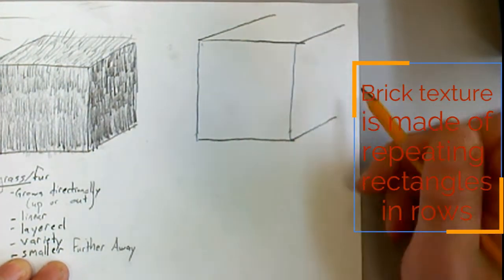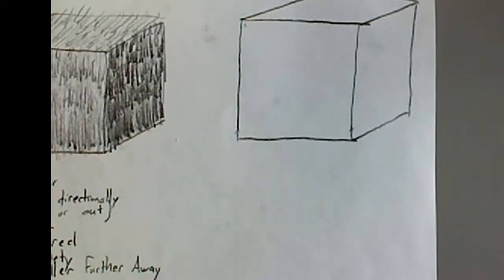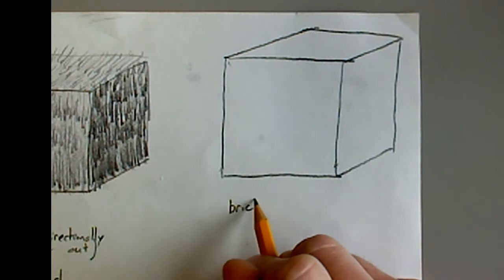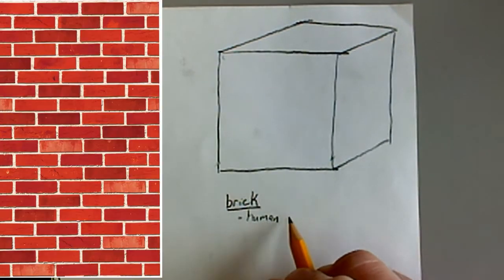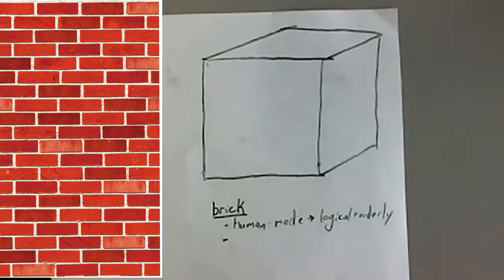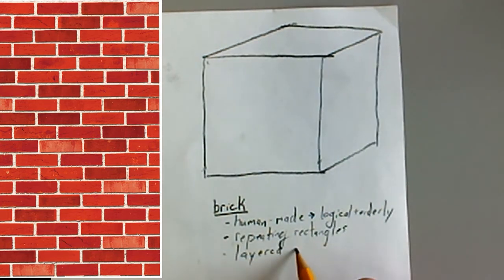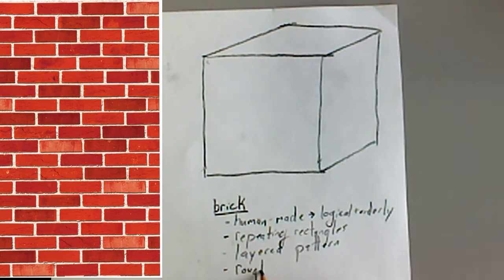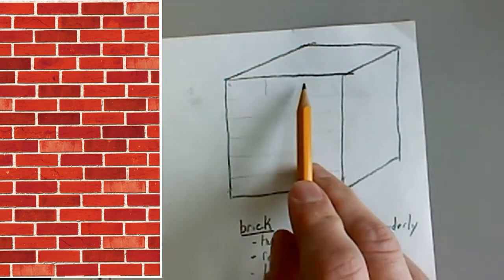For this box we are going to be making a brick-like texture. What do we know about bricks? Well, these are human-made objects that have a logic and order to them. Bricks are generally the same size and shape of a sort of rectilinear form. We know that they form a repeating rectangular pattern and that generally there will be very similar layers alternating. The surface is going to have a rough texture and we also want to remember that the lines between the bricks, the grout or mortar is lighter than the brick itself.